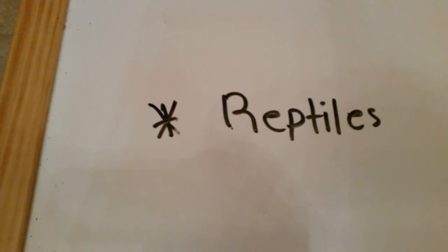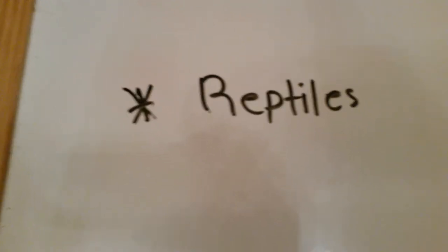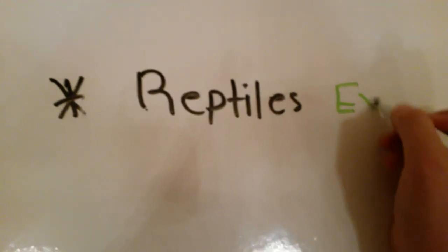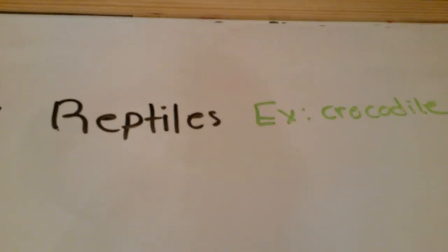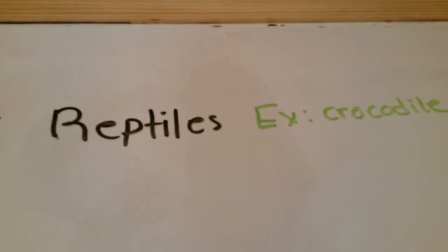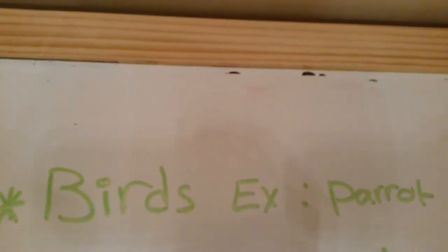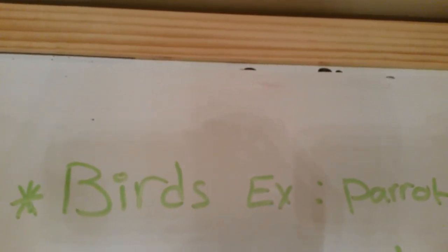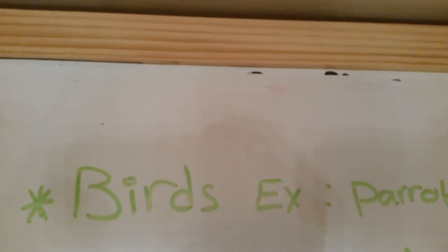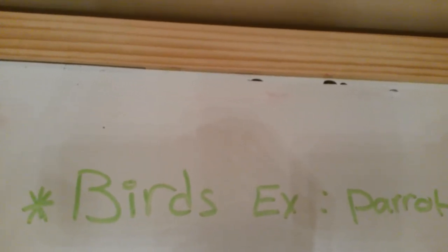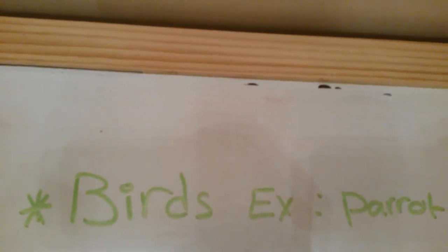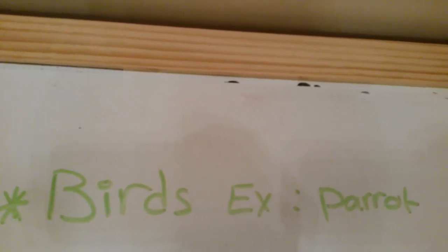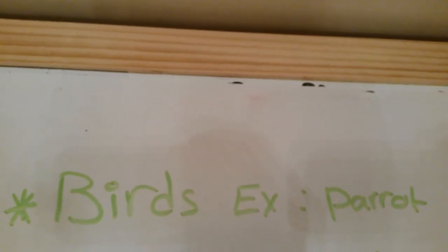Birds are warm-blooded vertebrates, which means that they maintain constant body temperature, not depending on their environment. They have wings and bodies covered with feathers to stay warm and to help them fly. They have lungs for breathing and a heart with four chambers. They hatch from eggs.